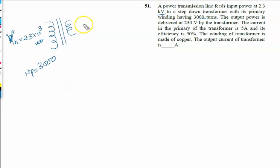The output power is delivered at 230V, output power is 230V. The current in the primary of the transmission is 5A. Efficiency is 90%. The winding of the transformer is made of copper.